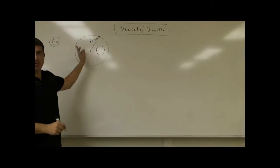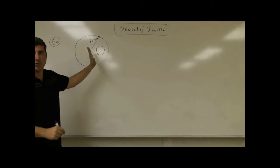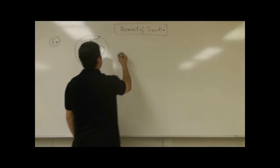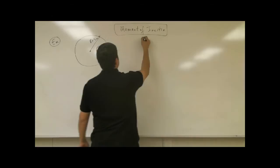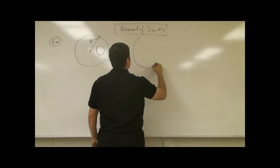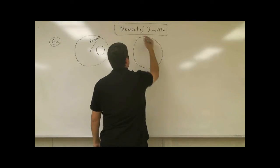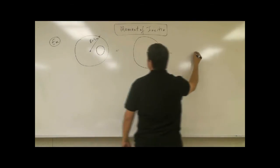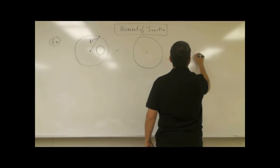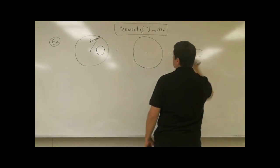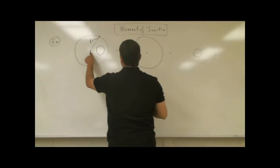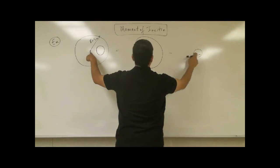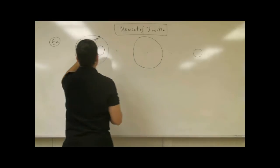Then we can do any shifting that we want to do. What you're going to do is consider this as the moment of inertia of a solid disc minus the moment of inertia of the cavity about that place. You're going to do subtraction.